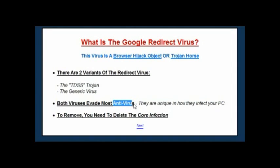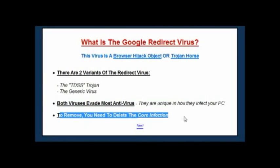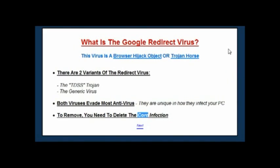Antivirus programs basically look for either a rogue file or application on your PC. Unfortunately the redirect virus doesn't place a program or file that most antivirus programs will actually identify, which means you can't use the likes of AVG, Norton, Trend Micro, or any of the top antivirus programs with this virus. To remove the infection you've got to delete the core of it — you've got to delete the files, the settings, or the options that are causing your computer to redirect. And that's the tricky bit that most people don't know how to do.